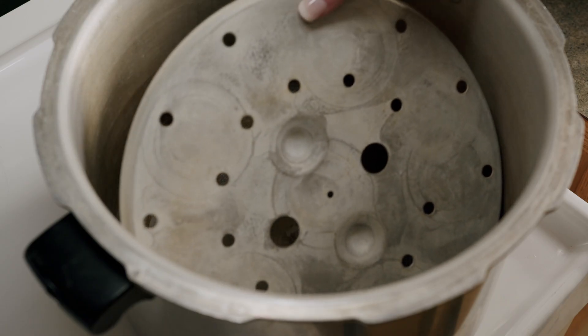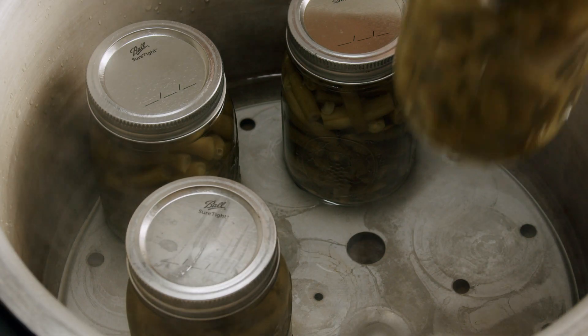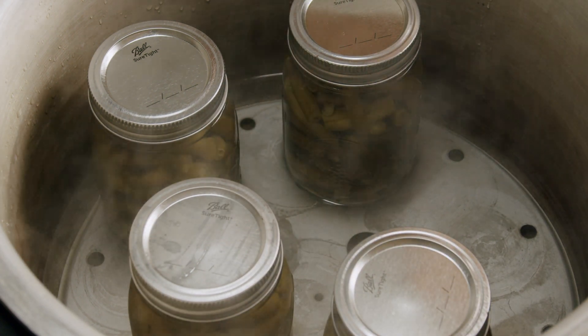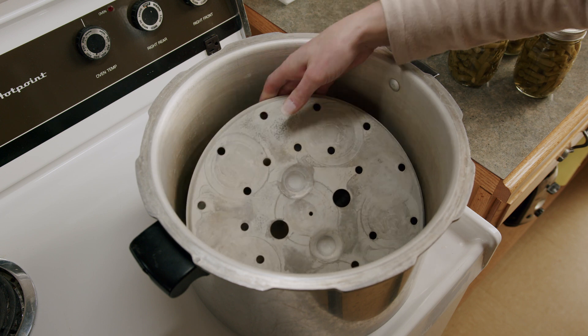A rack goes on the bottom of all canners to prevent jars from sitting directly on the canner which gets very hot and can cause jar breakage. Place your rack in the bottom of the canner.